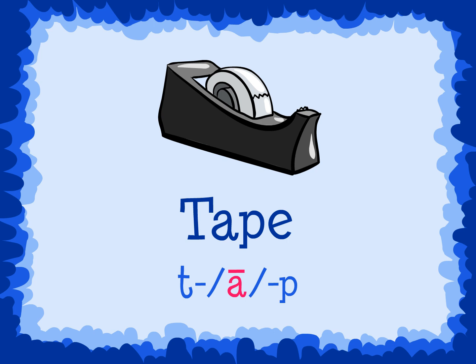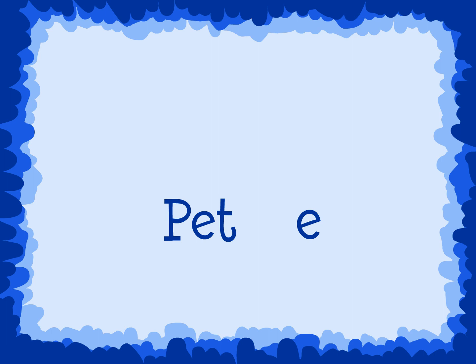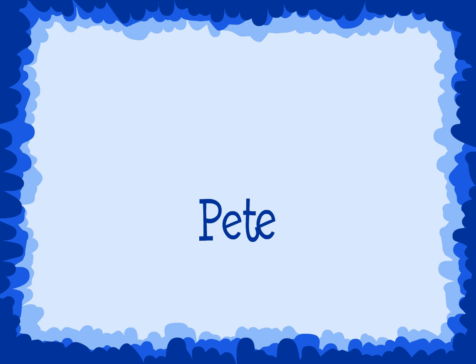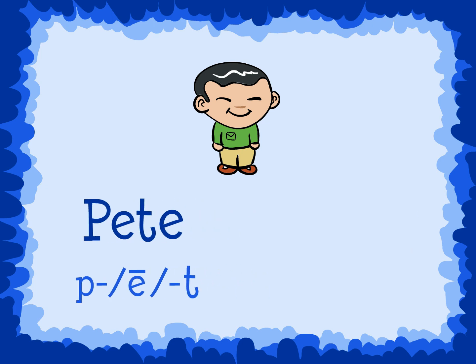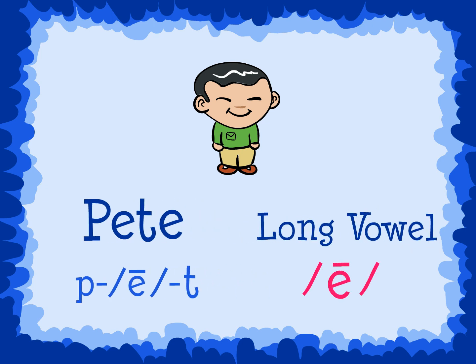Let's try another one. If we add an E to the end of the word 'pet,' we get the word 'peat.' The letters would be pronounced P, E, T. E is the long vowel sound of the letter E. Again, we don't pronounce the last E. All the E does is change the way we pronounce the first E.